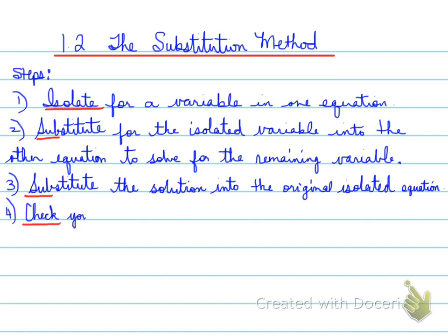Step number four is to check. Check your solution by completing a left side, right side check, and I recommend you use a t-table. When you are checking something, you're checking to see if it's equal — therefore, there shouldn't be any equal signs in a check. Remember, you have to remember the four words: isolate, sub, sub, check, because you will see those happen over and over again.